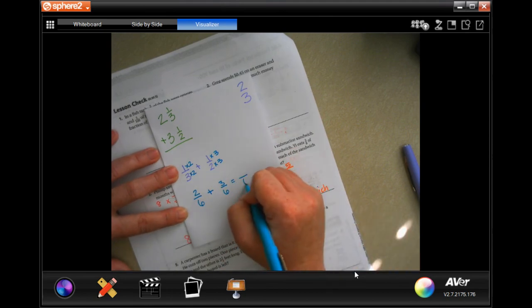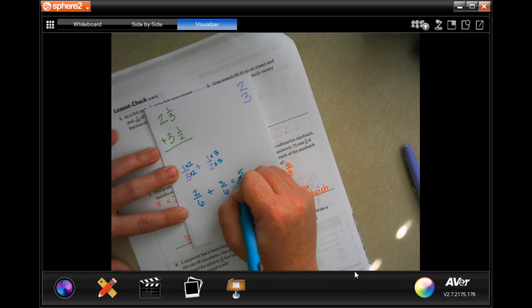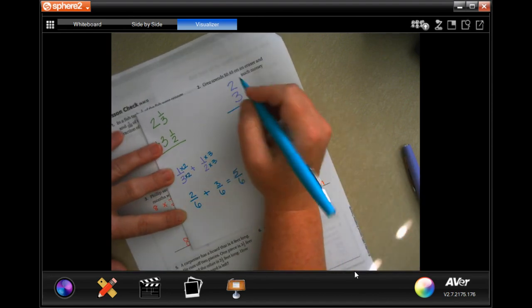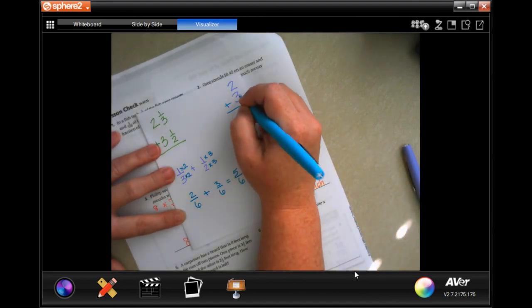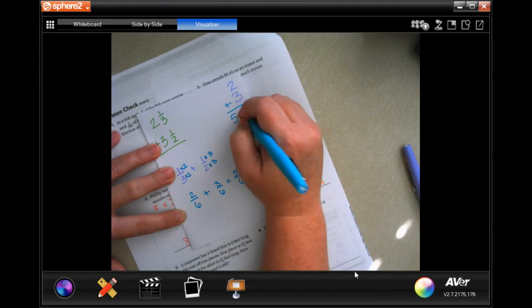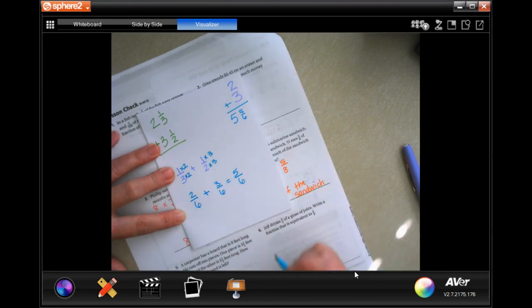So, now, I keep my denominator and 2 plus 3 is 5. So, I'm going to add these up. So, 5 and then I'm going to put my fraction with it, 5/6.